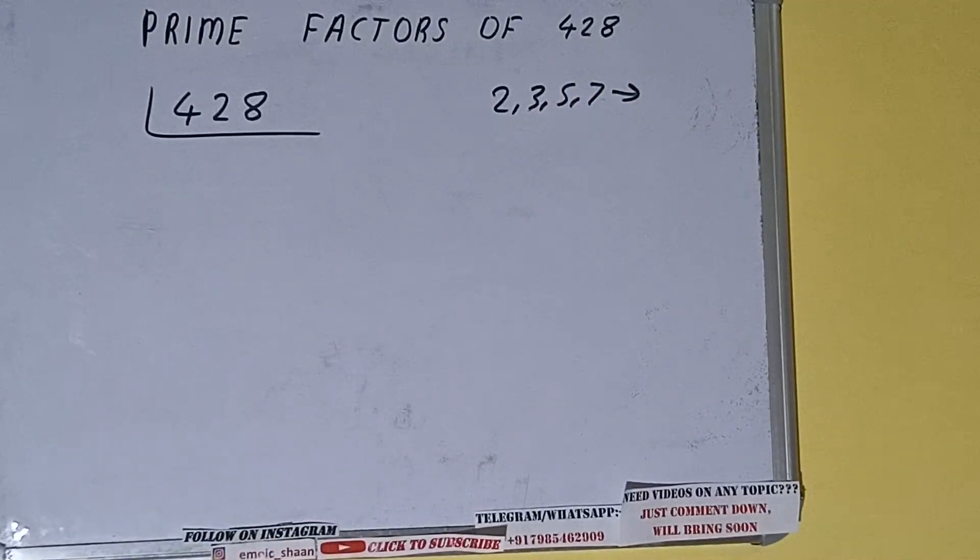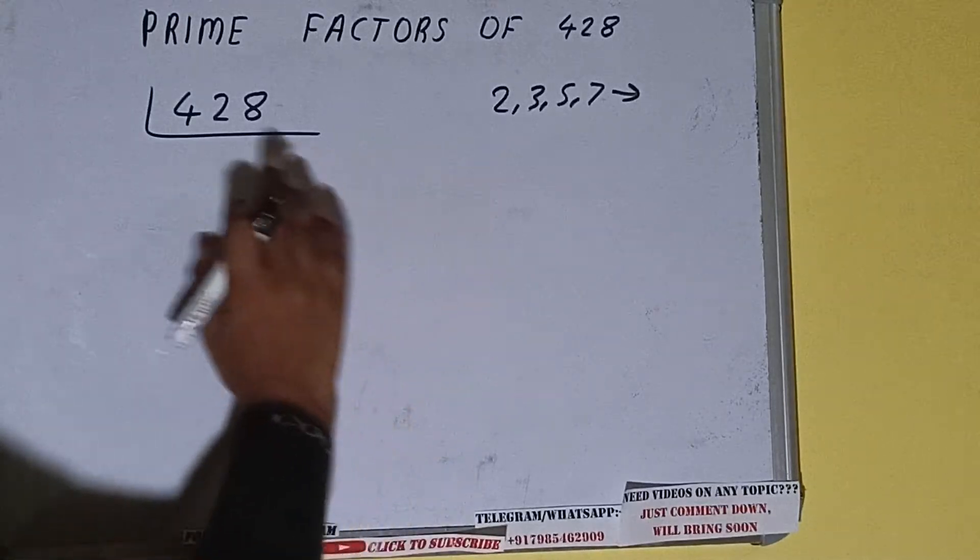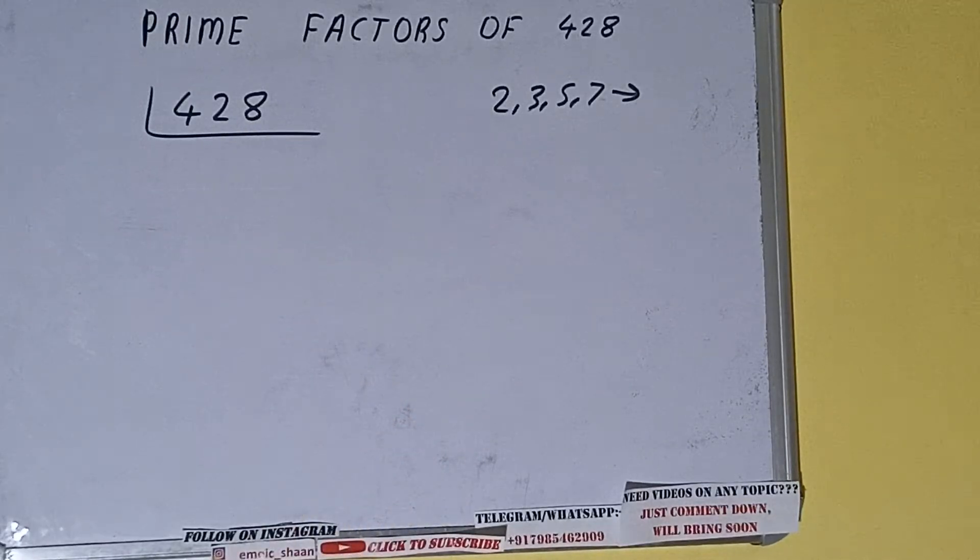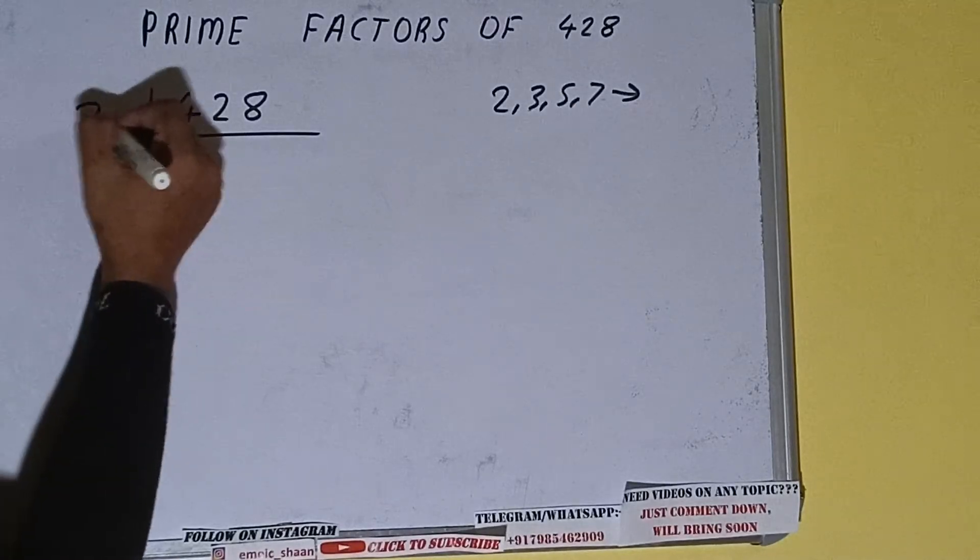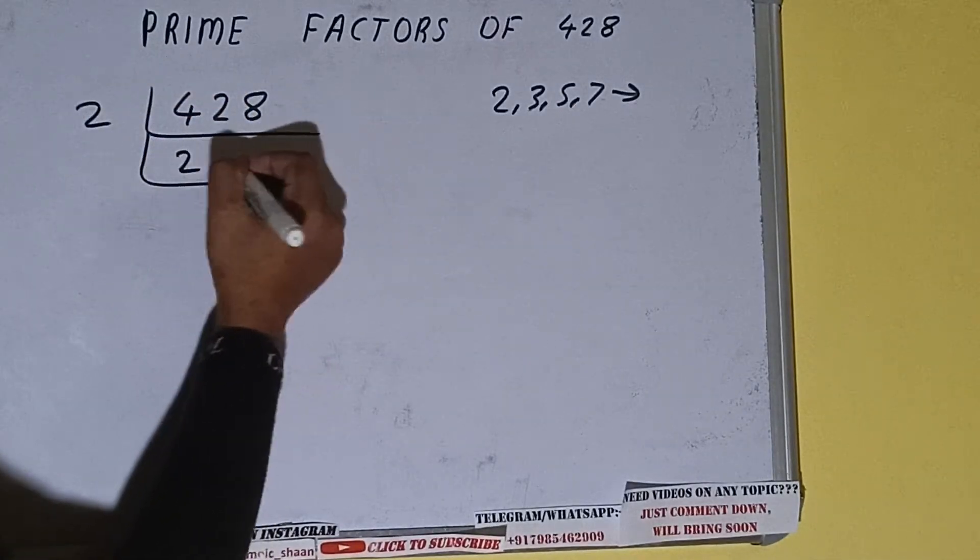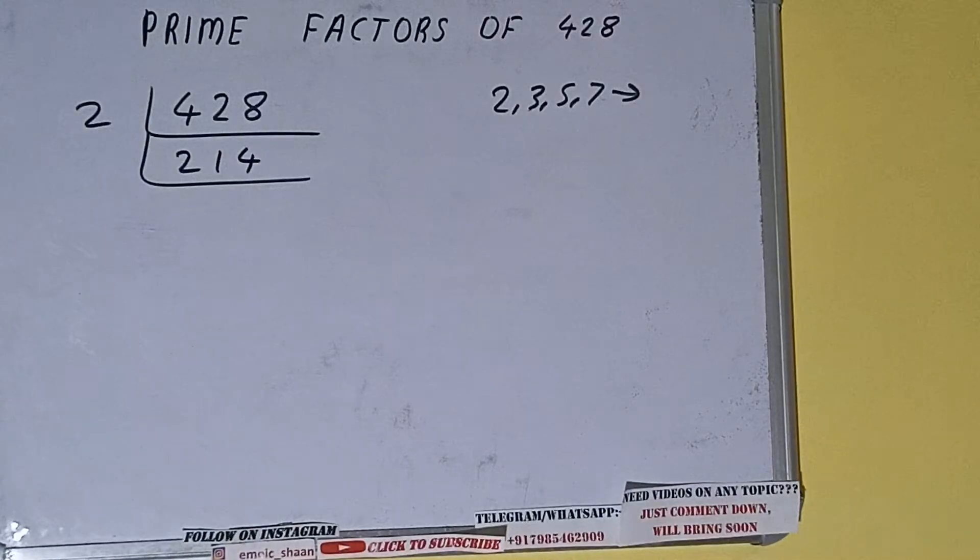We'll be checking with the lowest prime number we have, that is 2. Is the number 428 divisible by 2? Yes it is, because the number is even. So we'll divide it and we'll be having 214.